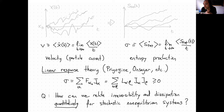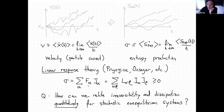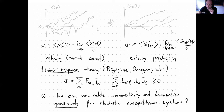For example, a force could be a gradient of concentration, which generates a particle current. The current times the concentration gradient will always be positive. When you have many fluxes, you have a combination. Close to equilibrium, fluxes and forces are related linearly — so you can say that the force is the Onsager coefficient times the flux — which makes the entropy production a bilinear form in the fluxes. This makes the entire entropy production positive because of the Onsager reciprocity relations. However, this is from the previous century. How can we relate irreversibility and dissipation quantitatively in non-equilibrium systems in the 21st century?